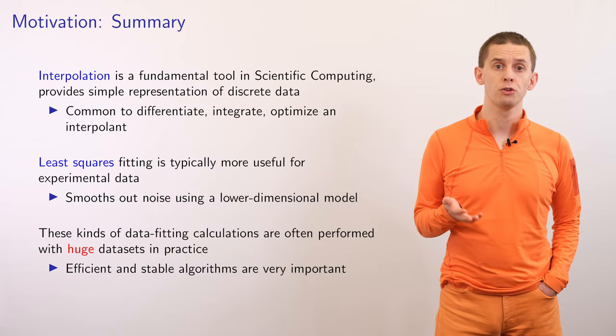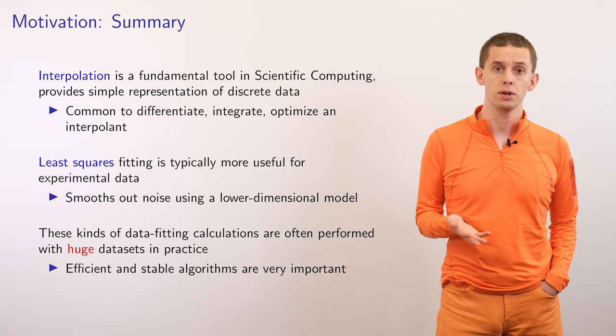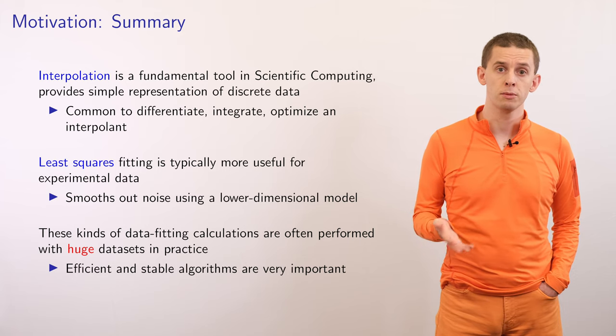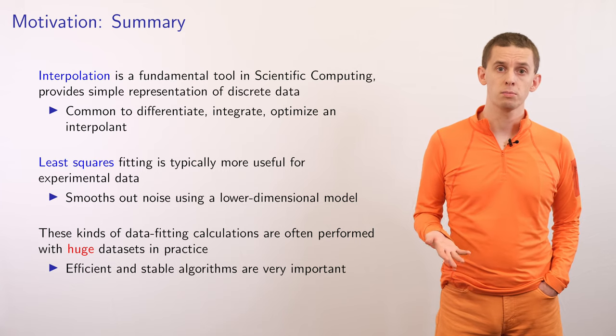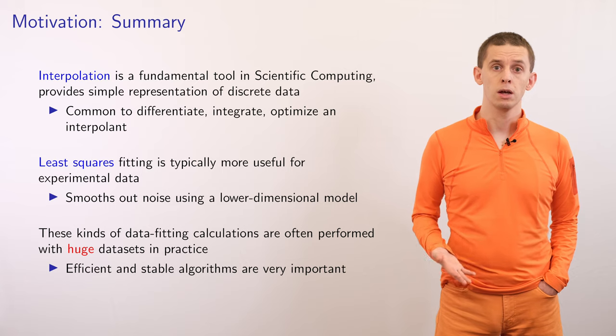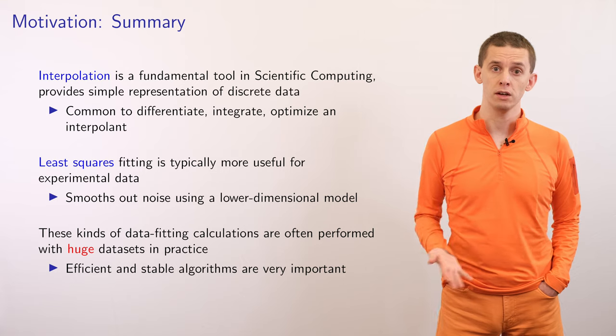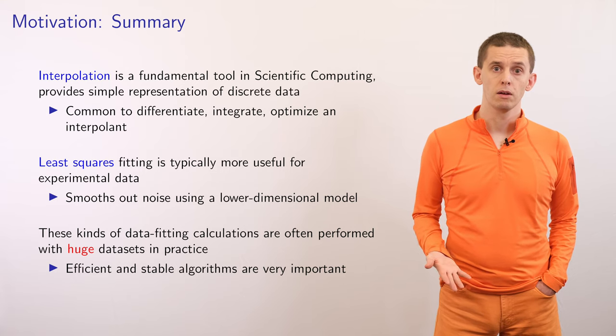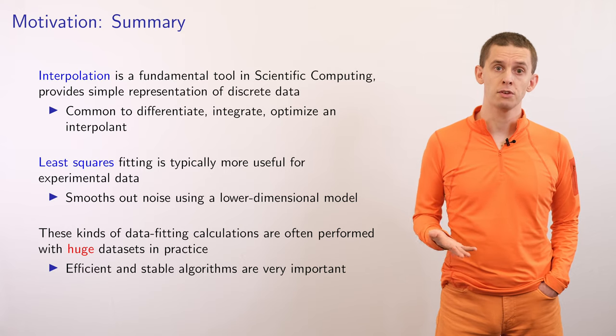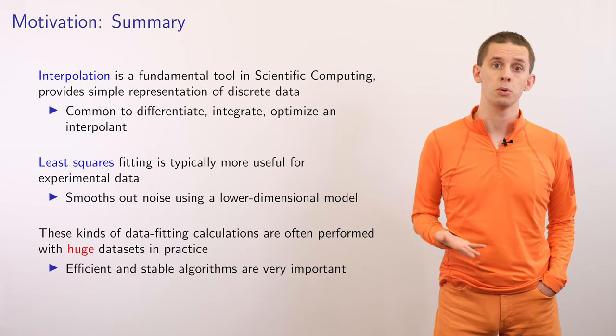In summary, interpolation is a fundamental tool in scientific computing and provides a simple representation of discrete data. It's common to differentiate, integrate, or even optimize interpolants. Least squares methods are typically more appropriate when we're dealing with real-world data with noise. By using lower-dimensional models, we can smooth out the noise in our data set. While we only looked at some small examples, it's common to apply these data fitting methods to huge data sets. Because of this, having efficient and stable algorithms is very important.